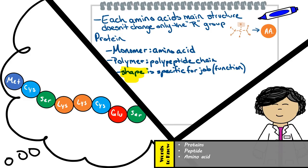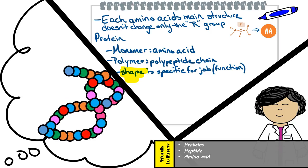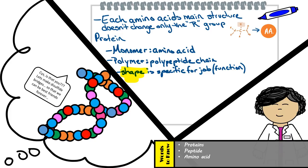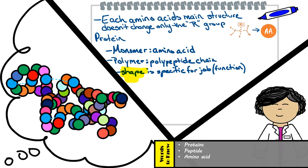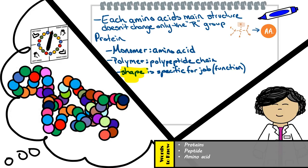Every amino acid has the same basic structure, but varies in the R group. Certain R groups repel or attract to other R groups, which means that they affect the way the amino acid chains fold, giving the protein a particular shape. The amino acid cysteines tend to make special bonds called disulfide bridges, which help the folded protein maintain its shape. Polypeptide chains can fold in different ways based on the various interactions seen between R groups — such as hydrogen bonds, disulfide bridges, ionic bonds, or hydrophobic interactions — causing the chain to fold and bend into a certain unique shape.